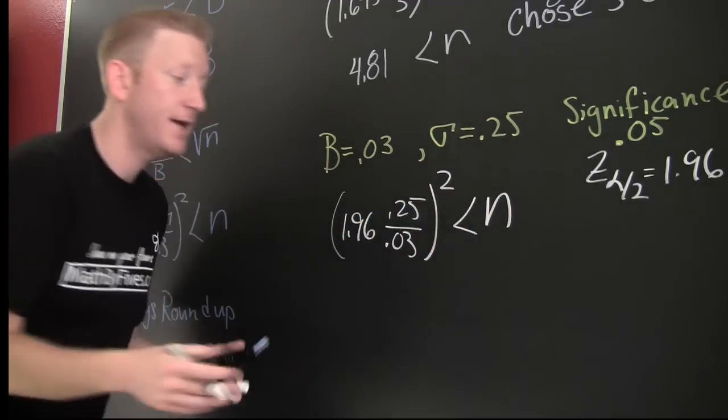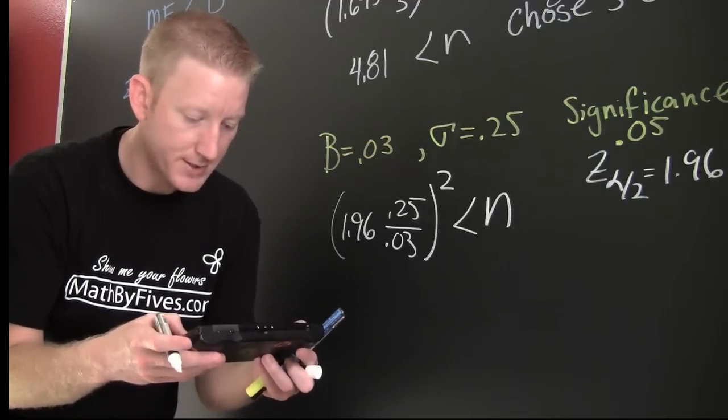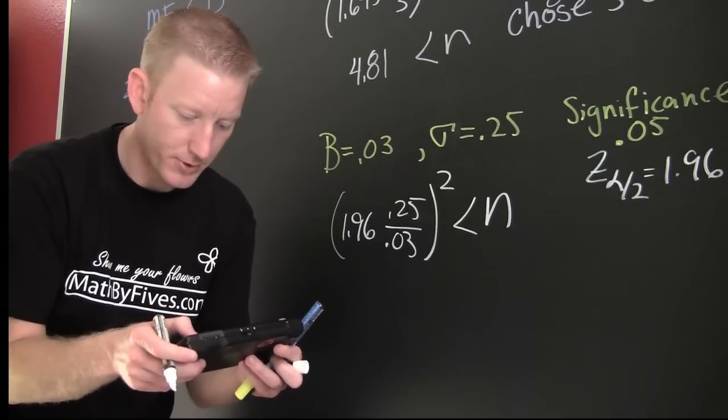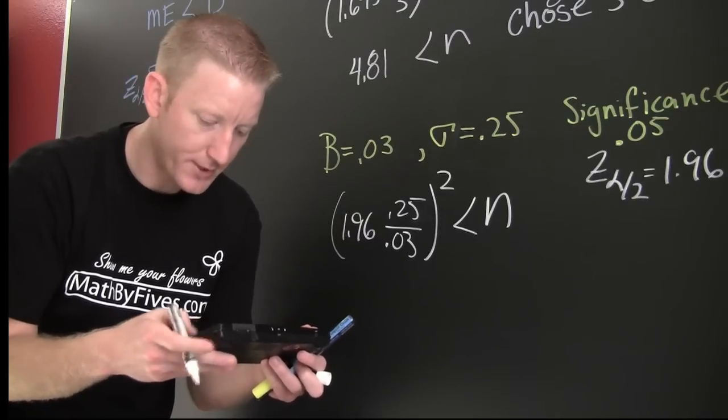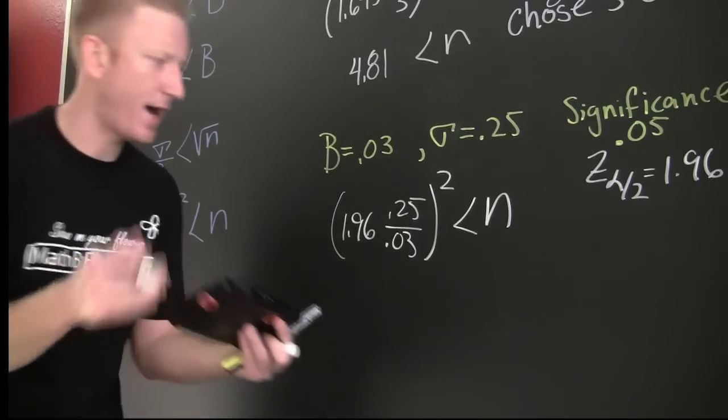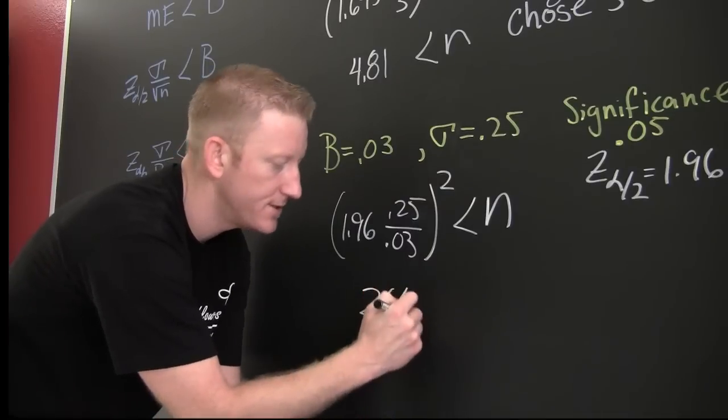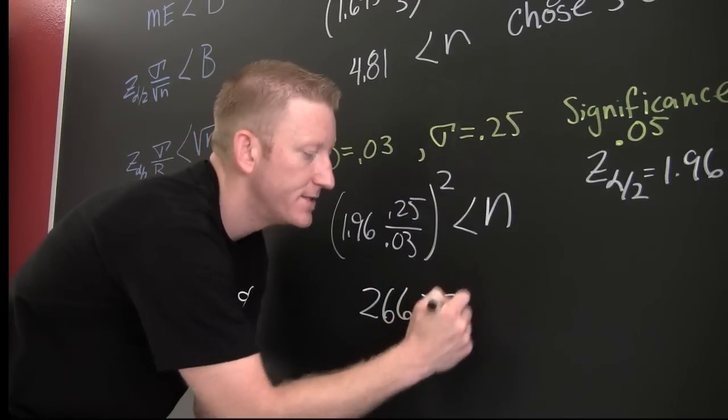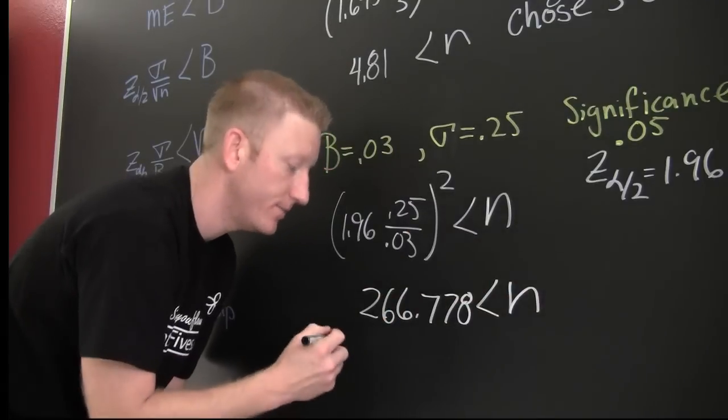1.96 times 0.25 divided by 0.03, close it, square it. Don't forget to square it. Wow, this is much larger. This is 266.778 and that's smaller than n. So then here I'm gonna choose...